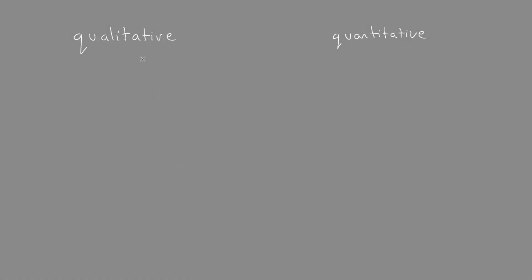The main difference between qualitative and quantitative is that qualitative is based on the senses — how does it look, how does it smell, or what's the texture — whereas quantitative measurements are numeric.